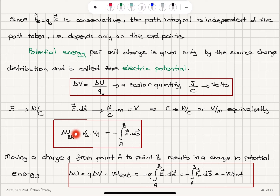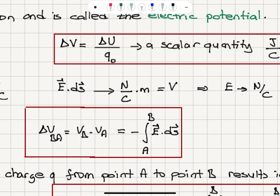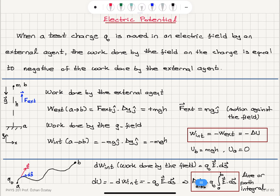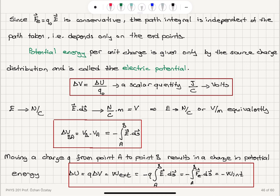The potential difference between point A and point B — the potential of B with respect to A — is VB minus VA, which equals minus the integral from A to B of E dot dS. If I multiply this by charge Q, I obtain the potential energy change going from point A to point B, equal to minus Q times the integral from A to B of E dot dS. The only difference between potential energy and potential is this charge factor.